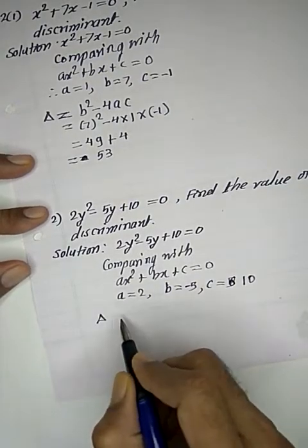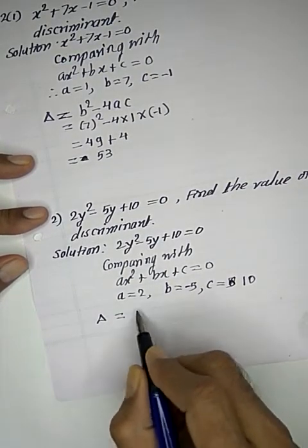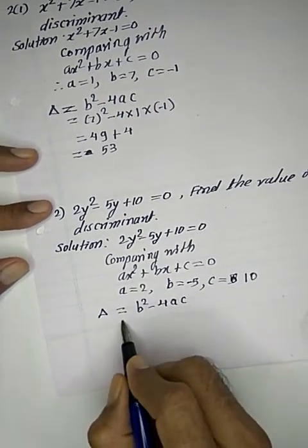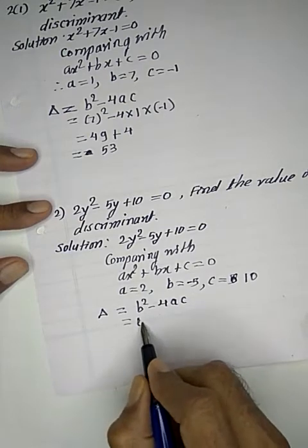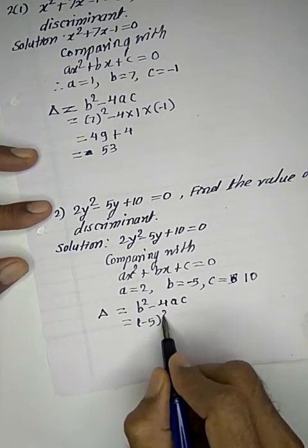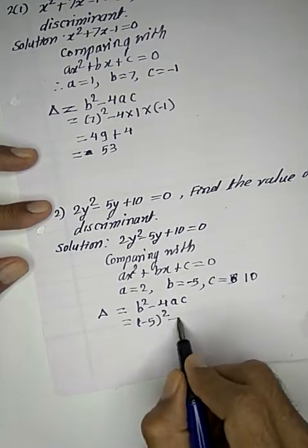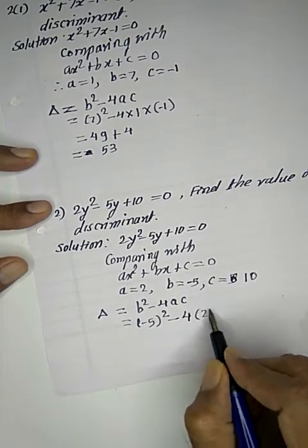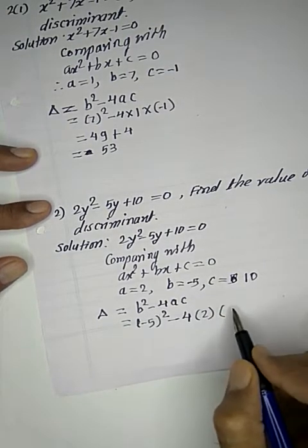The discriminant is equal to b² - 4ac. We substitute the values: b is -5, so (-5)² - 4(a)(c), where a is 2 and c is 10.